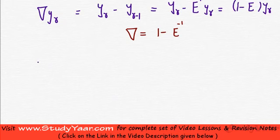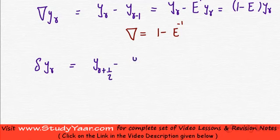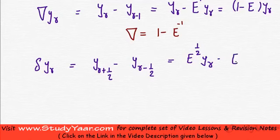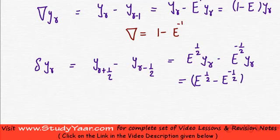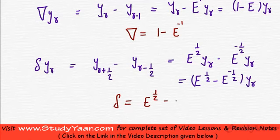Now let's see what the central difference operator gives when operated on YR. This is YR plus half minus YR minus half, which is equal to E raise to power half · YR minus E raise to power minus half · YR. So this is essentially equal to (E raise to power half minus E raise to power minus half)·YR. Therefore, the central difference operator δ is equal to E^(1/2) minus E^(-1/2).